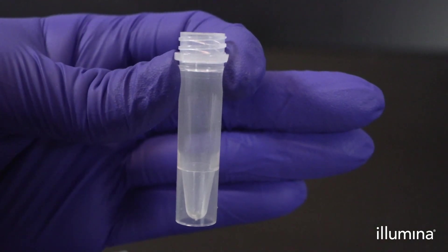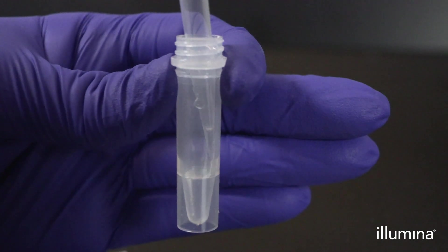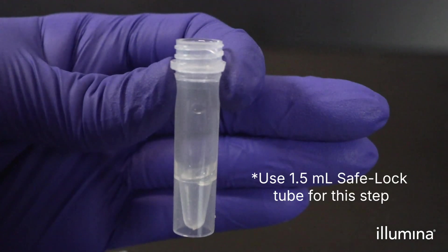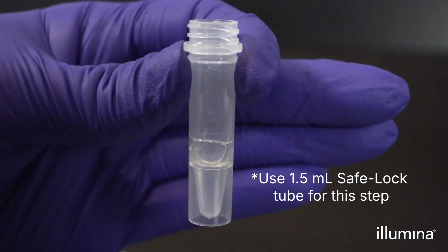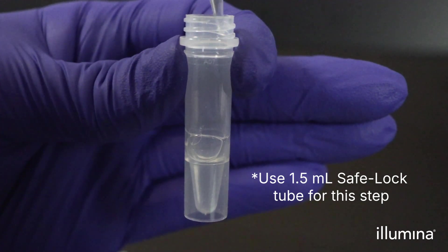Aliquot 210 microliters of the CLB3 into the 1.5 ml tubes for each sample being processed. For the remaining chemical lysis steps, we recommend processing one sample at a time.